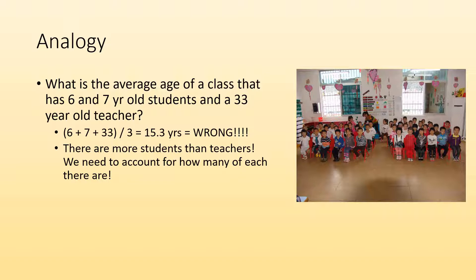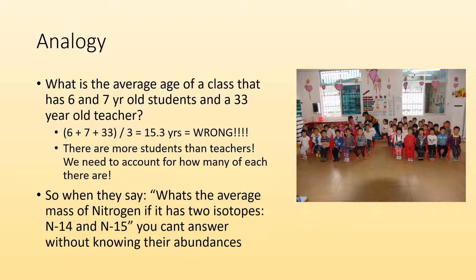We need to account for how many of each there are. It's not fair to just average those three numbers because maybe there's a lot of six-year-olds and there's only one teacher. So when they say what's the average mass of nitrogen, if it has two isotopes N-14 and N-15, you can't solve that. You can't answer that question without knowing the abundance of each isotope.